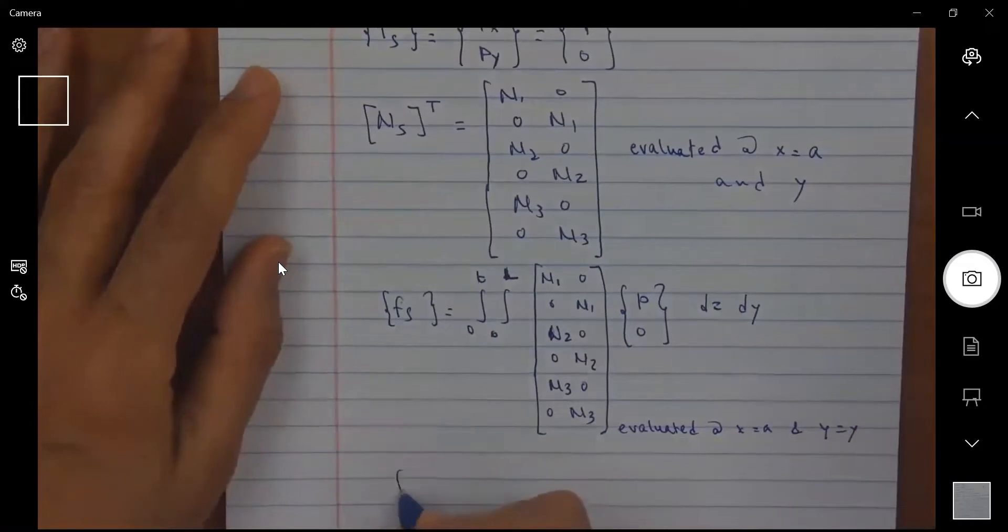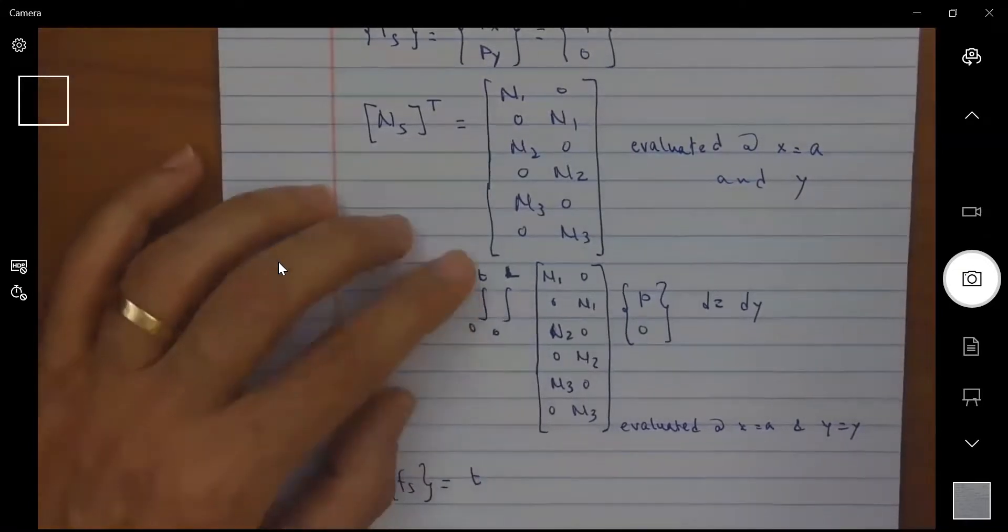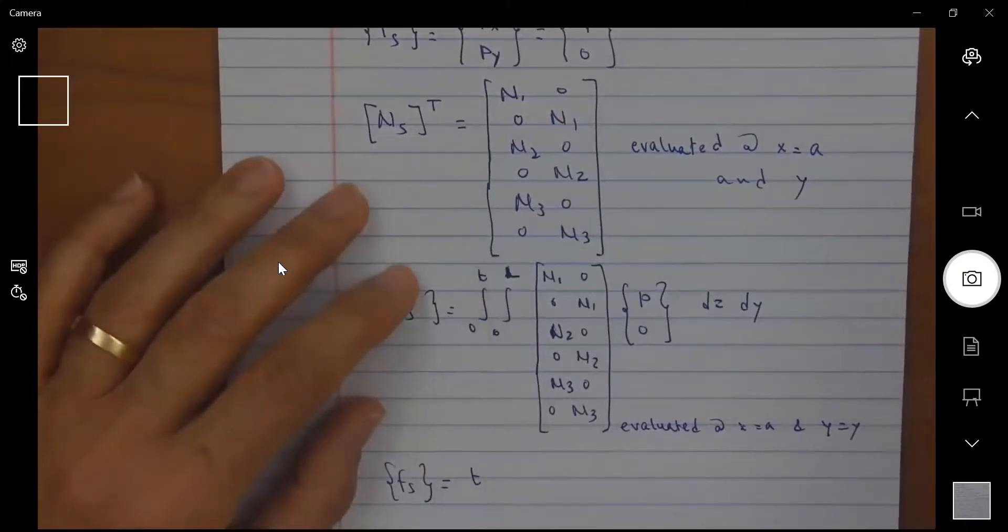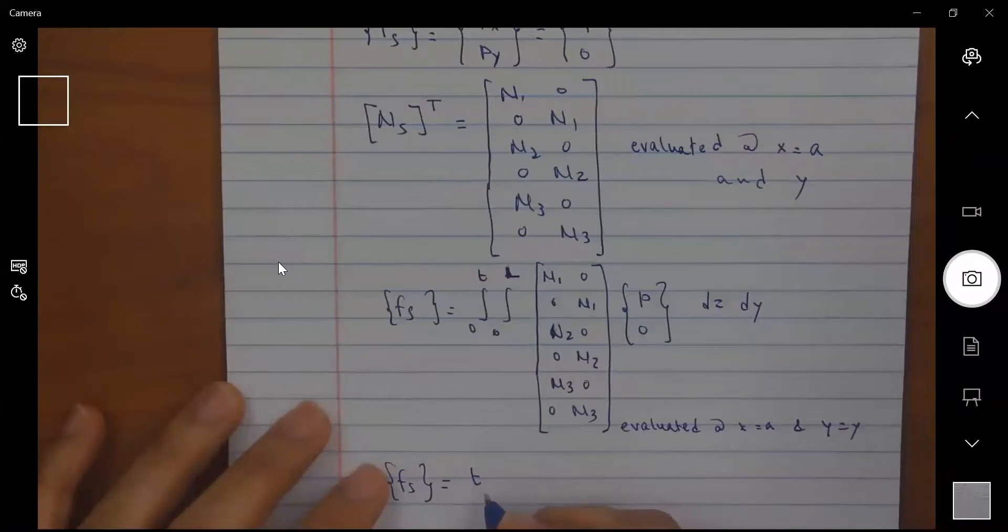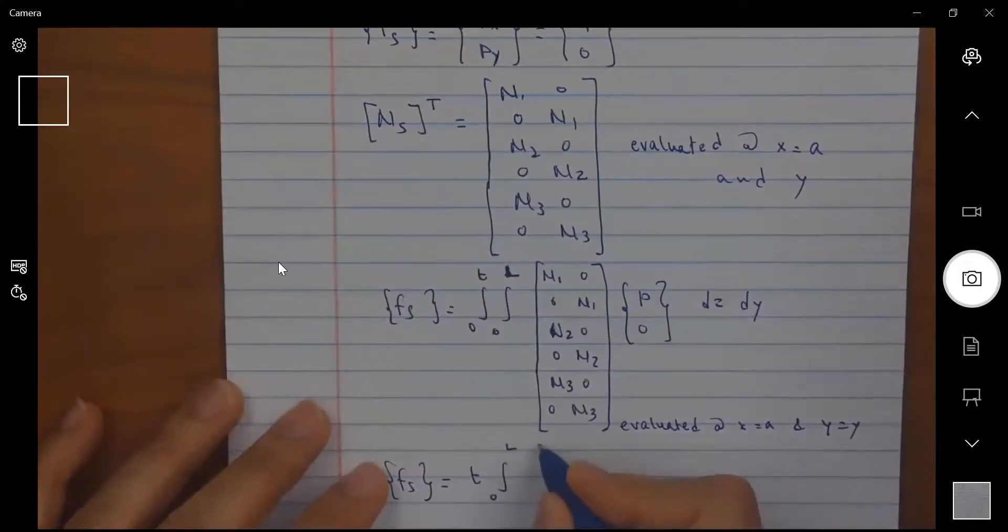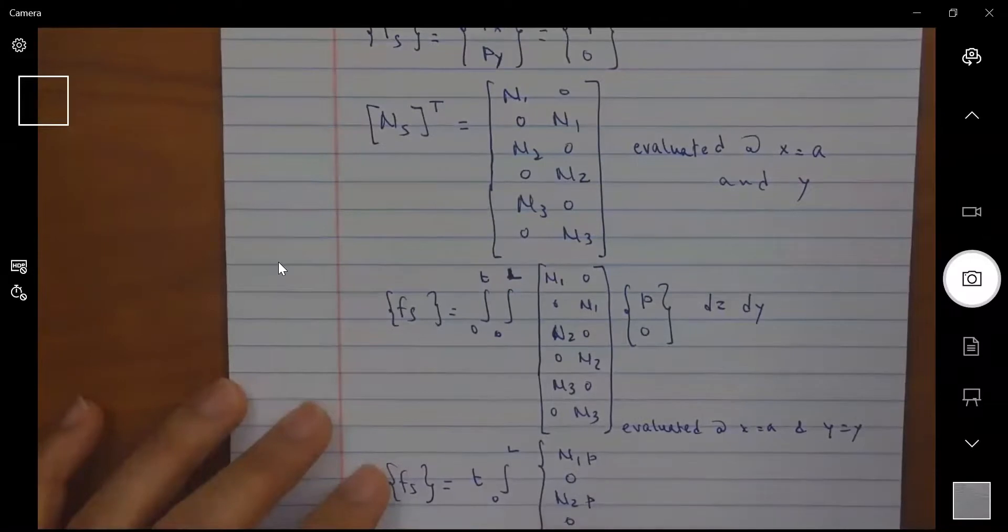So this is like saying then F S is equal to T going from 0 to T and T is a constant times the integral from 0 to L of N1 P, 0, N2 P, 0, N3 P and 0, D Y.